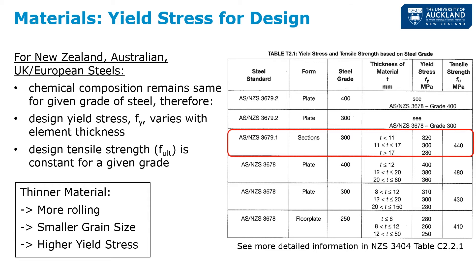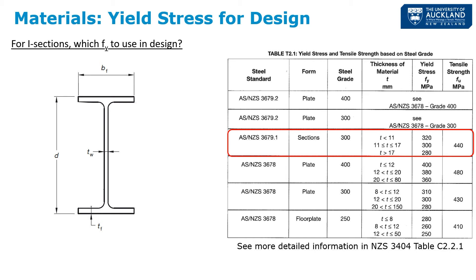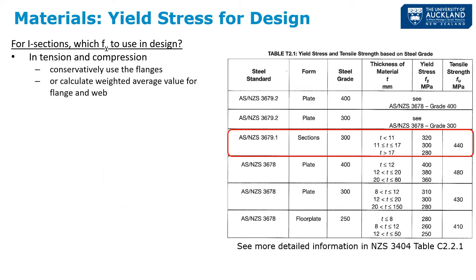A practical concern is: for an I-section with different web thickness (TW) and flange thickness (TF), which yield stress do we use in design? For tension and compression — axial loads — we can conservatively just use the yield stress of the flanges. For an I-section, the flanges are typically the thickest part since they're optimized for bending about the strong axis, so using the flange Fy gives a lower yield stress and a conservative design.